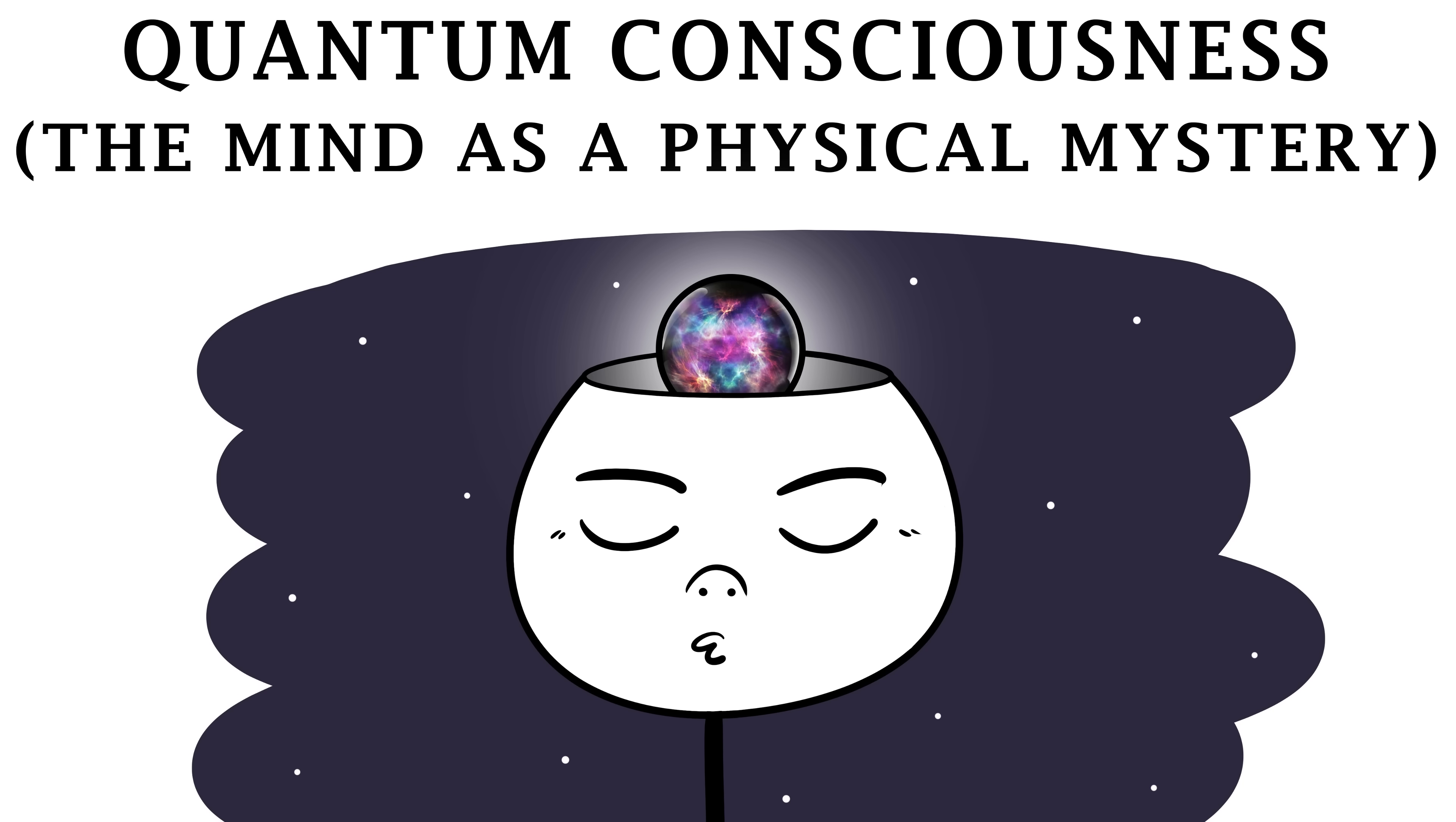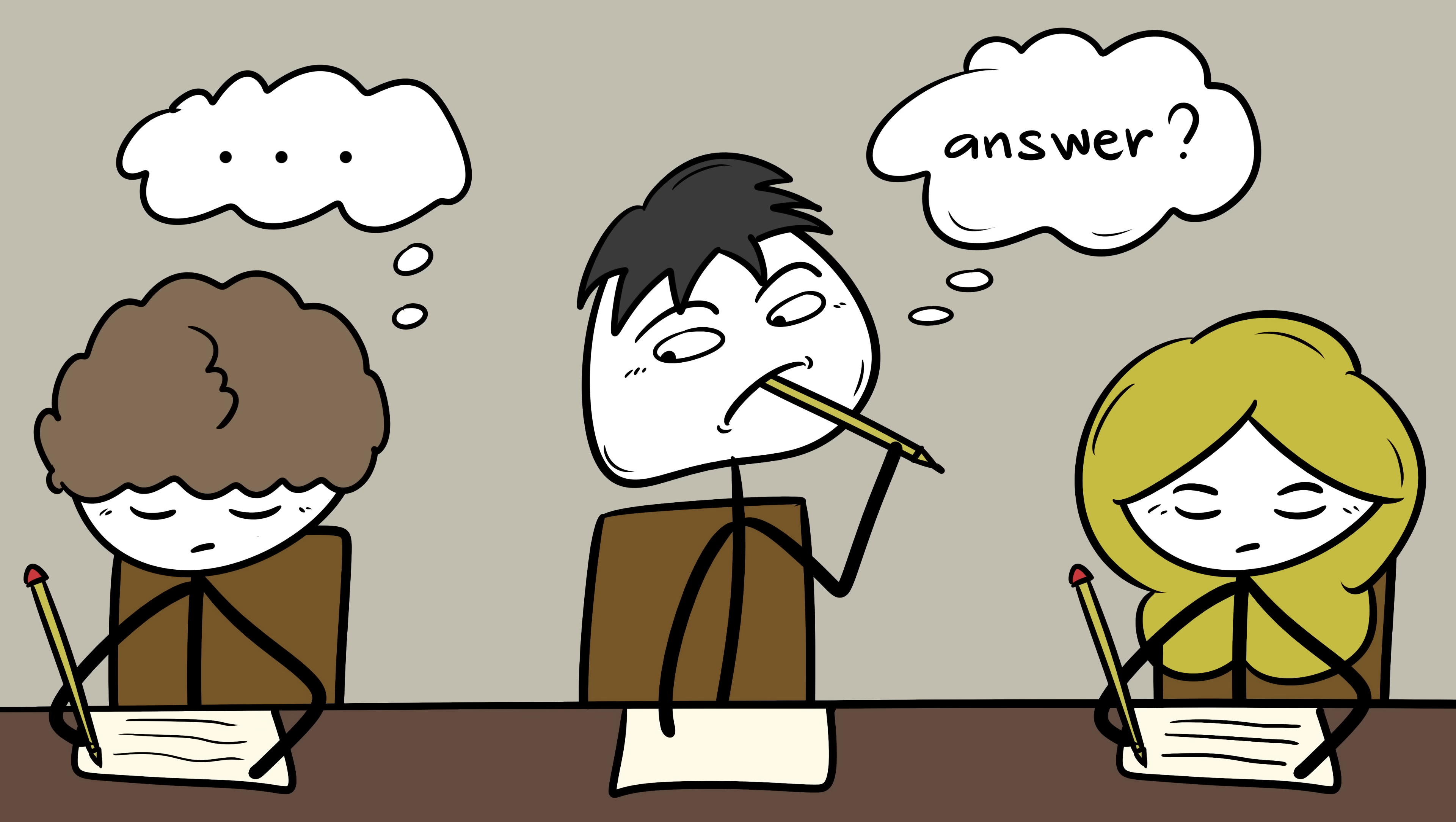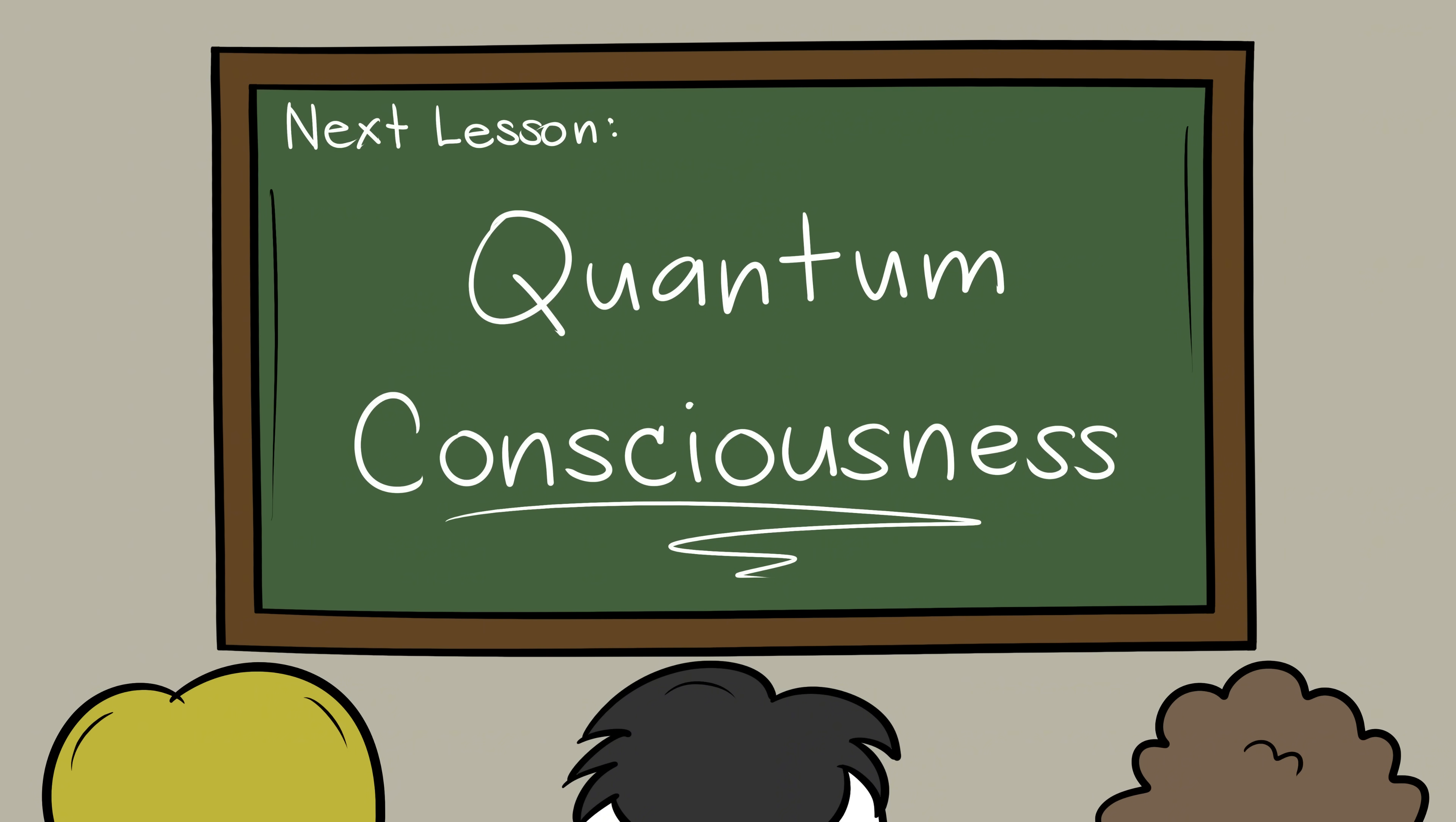Number two, quantum consciousness. The mind as a physical mystery. Here's a thought that makes scientists nervous. What if consciousness itself is a part of physics we don't yet understand? For centuries, physicists and neuroscientists have treated the mind as a byproduct of brain activity, something that happens when enough neurons fire. But quantum mechanics might be hinting that it's not that simple. Some researchers like Roger Penrose have suggested that quantum processes inside neurons could play a role in consciousness, that our thoughts, awareness, and decision making might come from subatomic behavior that doesn't follow classical rules. It's called quantum consciousness. And while it's controversial, it raises an interesting point. Maybe the brain isn't just a biological machine. Maybe it's also a quantum computer.